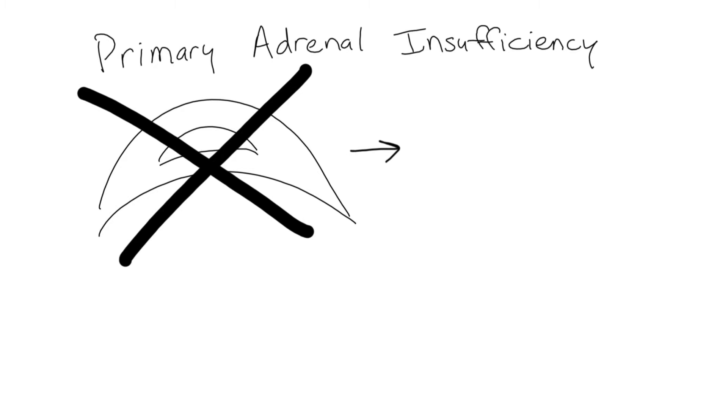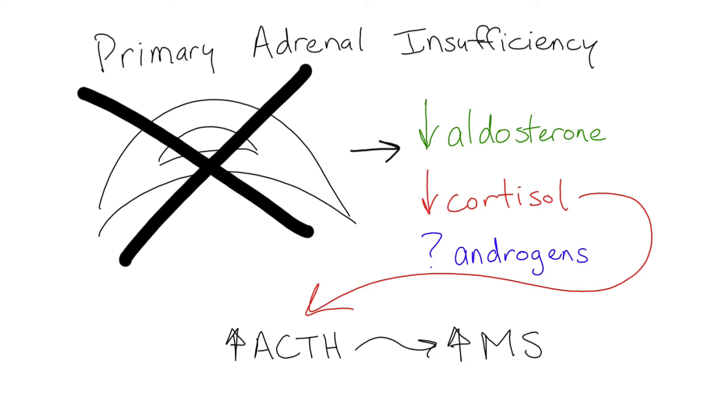There is mineralocorticoid deficiency and subsequent electrolyte and volume problems, cortisol and glucose metabolism issues, and variable androgen loss depending upon the patient's gonadal function. Negative feedback increases ACTH and causes hyperpigmentation from increased melanocyte stimulation.